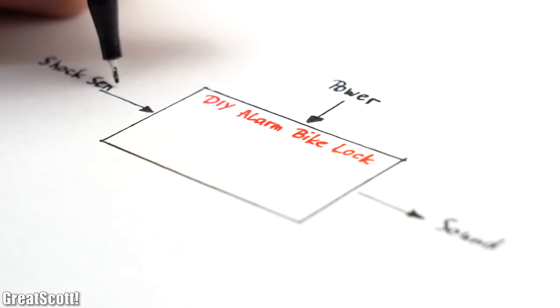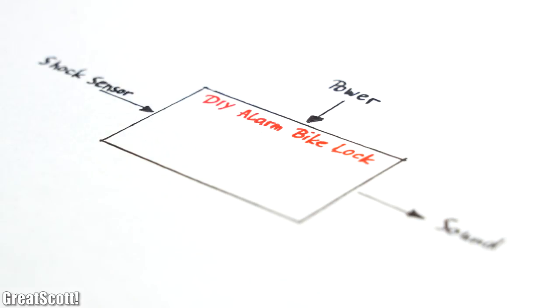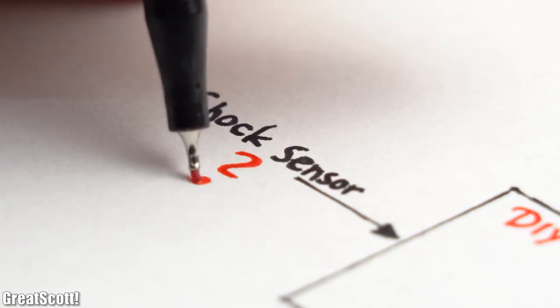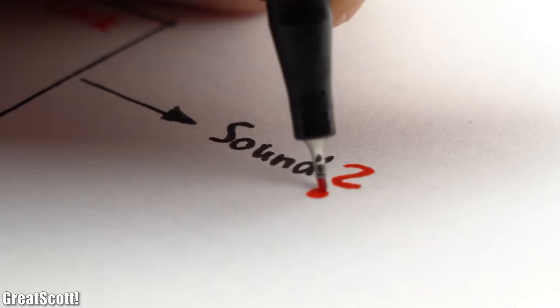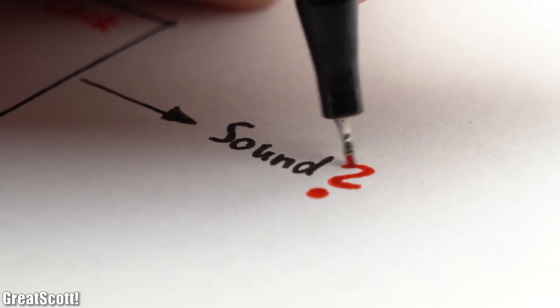Let's start off theoretically with the three most important questions about my bike lock: How to power it, how can I detect shocks, and how can I create a loud high-pitched noise?